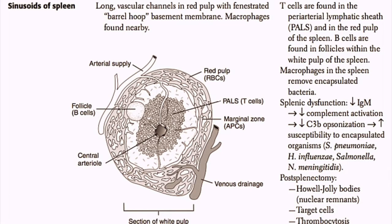Let's move on and talk about the spleen. Like the lymph node, the spleen is involved in filtration of antigens. The spleen has sinusoids — long vascular channels within the red pulp with fenestrated or barrel hoop basement membranes — and macrophages are found near these membranes. T cells in the spleen are found in the peri-arterial lymphatic sheath, or PALS, and also in the white pulp. B cells are found in follicles within the white pulp of the spleen.